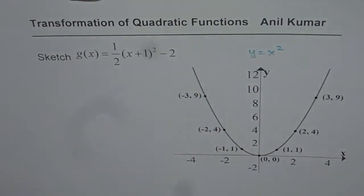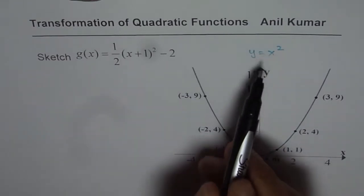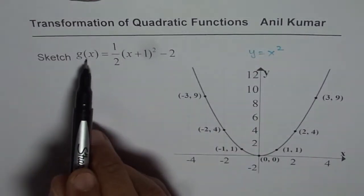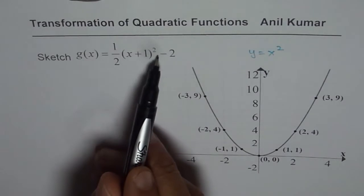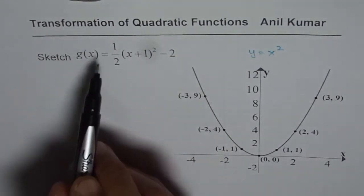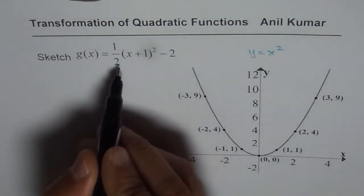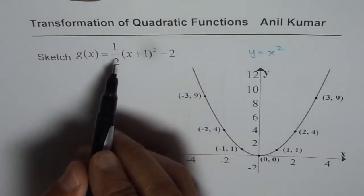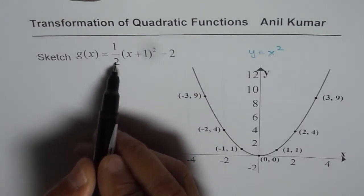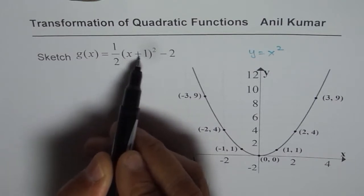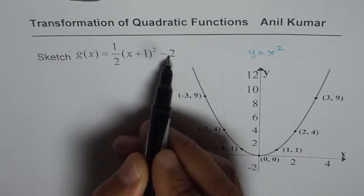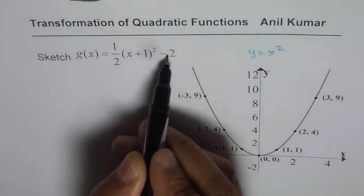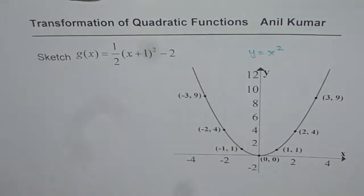Now, let us analyze the transformation from x² to g(x), which is 1/2(x+1)² - 2. As you can see, the transformation here is that 1/2 means vertically compressed by a factor of 1/2. And this +1 means horizontally translated 1 unit left. And that -2 means vertically translated 2 units down.